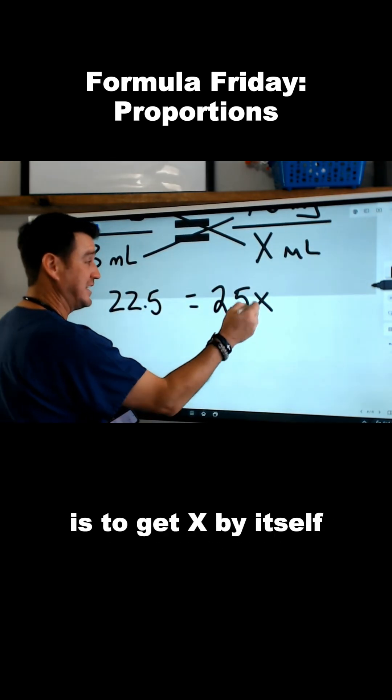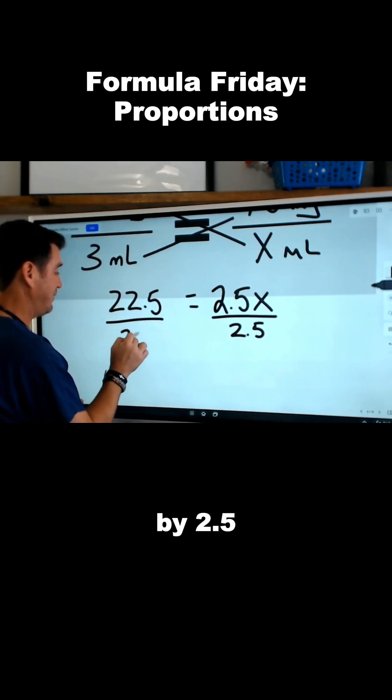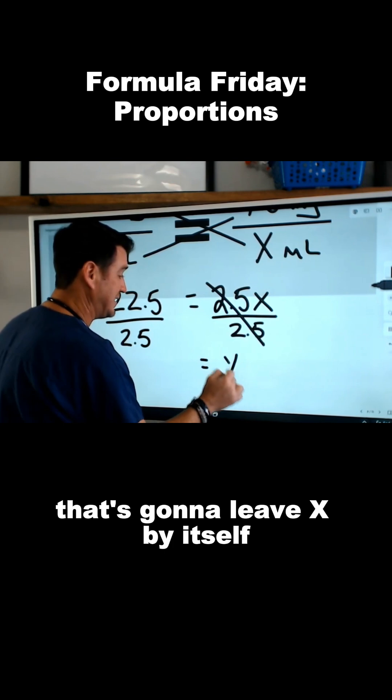Now all we have to do, remember, is to get x by itself. So we're going to divide both of these by 2.5. That's going to cross out and leave x by itself.